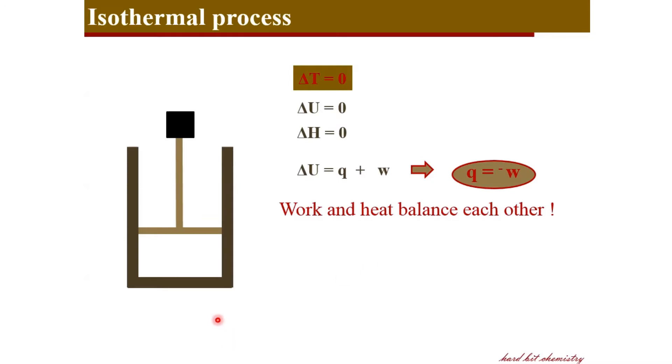If the system absorbs a certain amount of heat, an equivalent amount of work is done by the system. And if a certain amount of work is done on the system, the system loses an equivalent amount of heat. So for every joule of heat absorbed, there will be an equivalent joule of work done by the system. And for every joule of work done on the system, there will be an equivalent joule of heat liberated outward from the system.